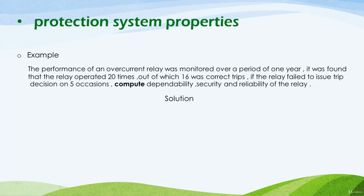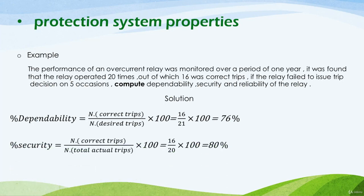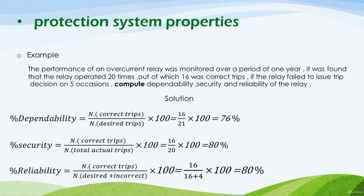Now we can compute the results. Dependability = correct trips / desired trips × 100 = 16/21 × 100 ≈ 76%. Security = correct trips / total actual trips × 100 = 16/20 × 100 = 80%. Reliability = correct trips / (desired trips + incorrect trips) = 16 / (21 + 4) ... actually it equals 16 / (16 + 4) × 100 = 80%. By this approach we detected the performance of the overcurrent relay for its first three parameters.